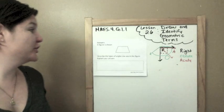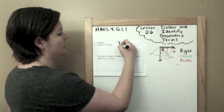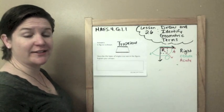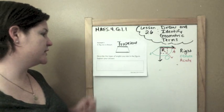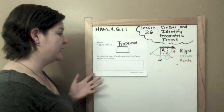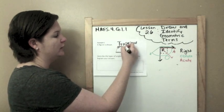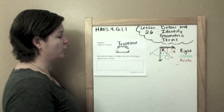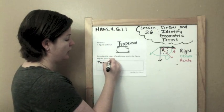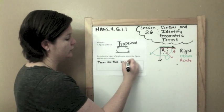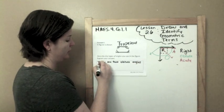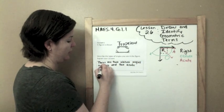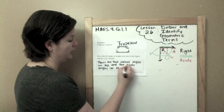Oh, it's a trapezoid. I know it is a trapezoid because there is one set of parallel lines and that classified, and it's a quadrilateral. But that's not what it's asking me to do. The question is asking me to describe the types of angles that I see in the figure. I'm going to explain your answer. So I see an angle here that is greater than a square corner. And I see angles here that are less than a square corner. So there are two obtuse angles on top and two acute angles on the bottom.